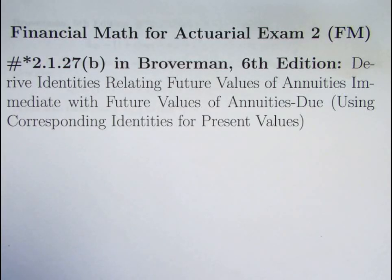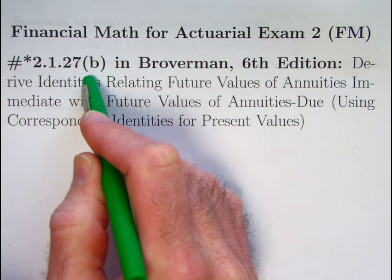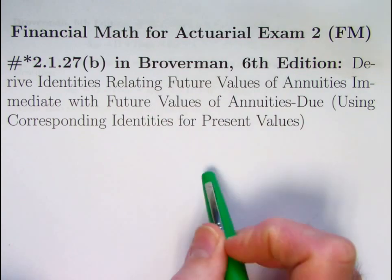This is the 38th video that I'm making on financial math for actuarial exam 2, also called actuarial exam FM. In video number 37 we looked at part A of a problem. We're going to look at part B of the same problem, 2.1.27 in this video.